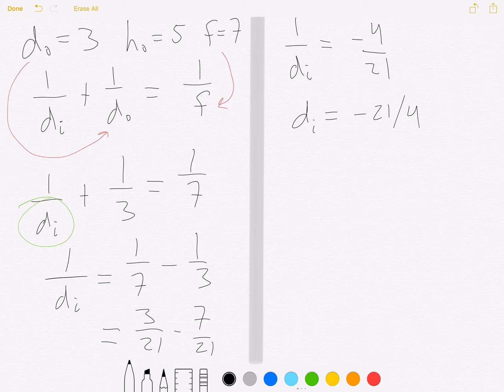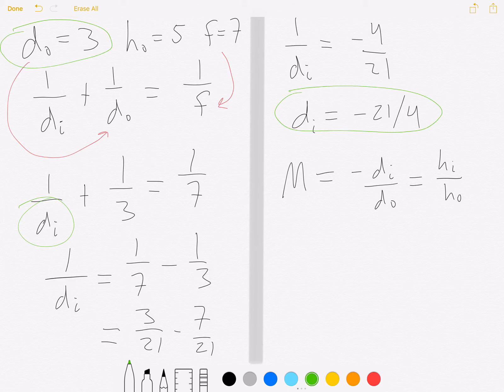Let's look at the magnification equation now. Magnification equals negative di over do, and it also equals the image height over the object height. Since we know the object distance and we know the image distance, I think we're going to use this side of the equation to start out with.